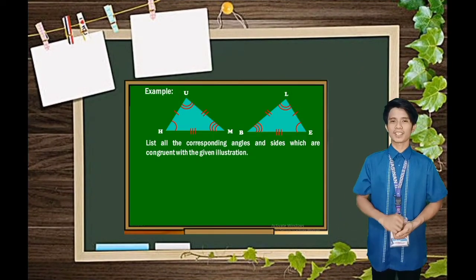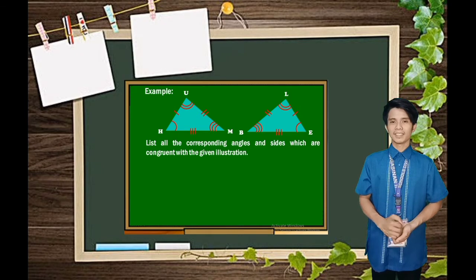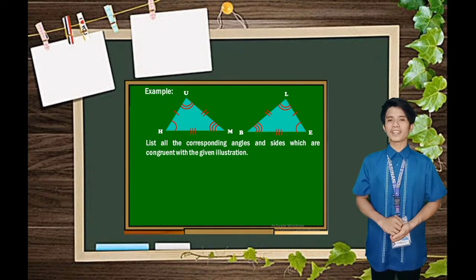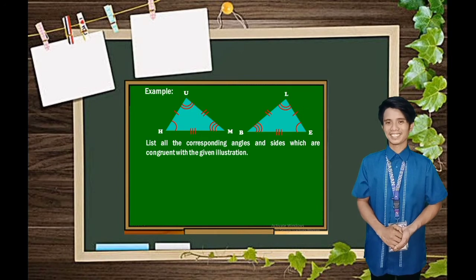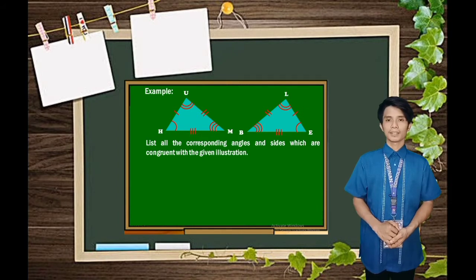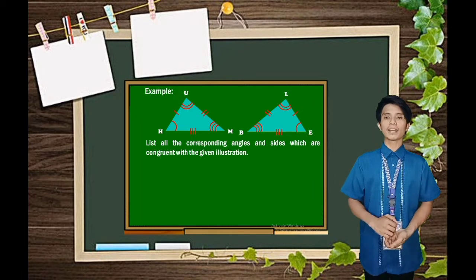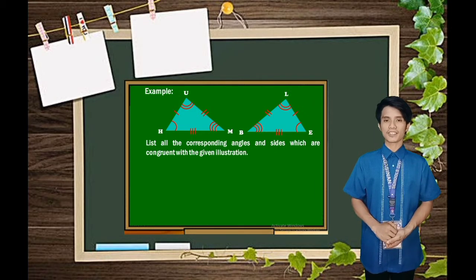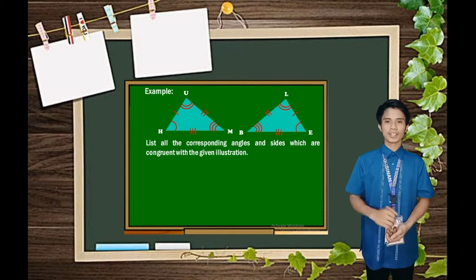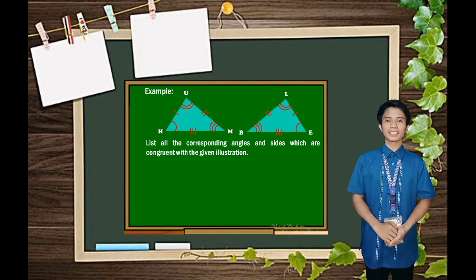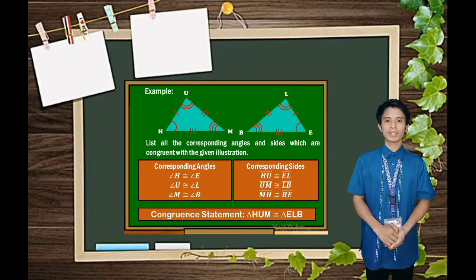Here are some examples. List all the corresponding angles and sides which are congruent in the given illustration. Use these special markings to identify the corresponding sides and angles. For these triangles, the congruence statement is triangle HUM is congruent to triangle ELB.